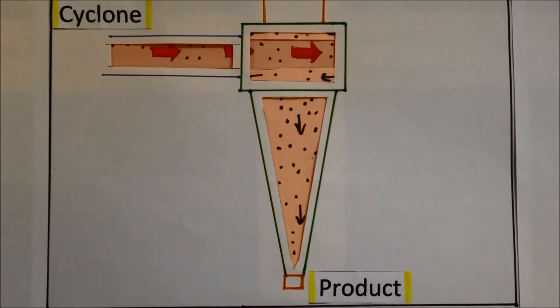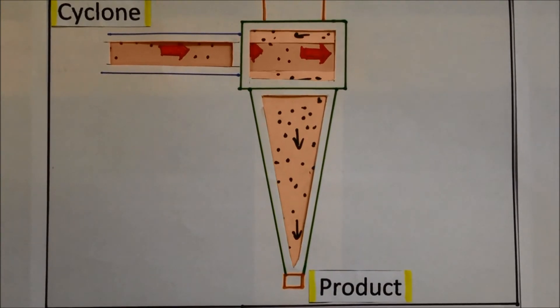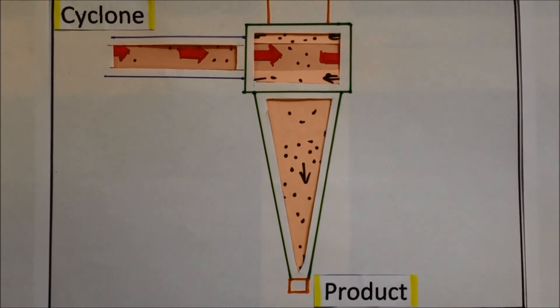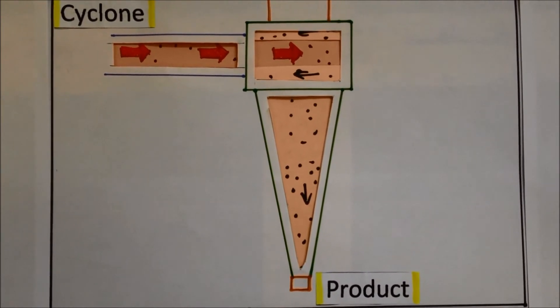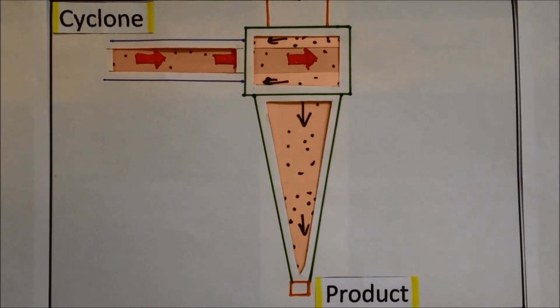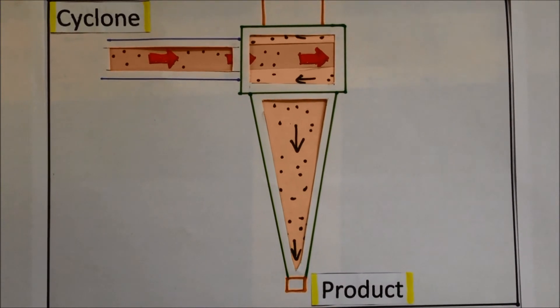Powder is further dried in the cyclone. Separation of dried powder and air takes place in the cyclone. Powder is discharged from the cyclone through powder discharge valves and collected as product.